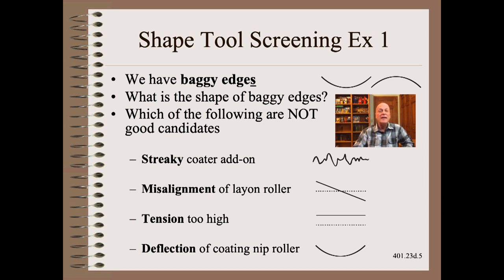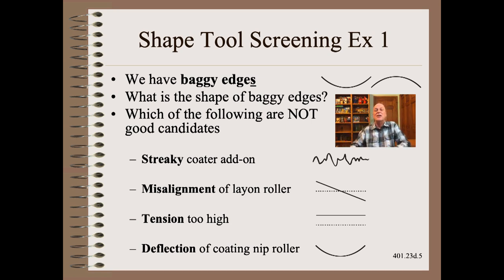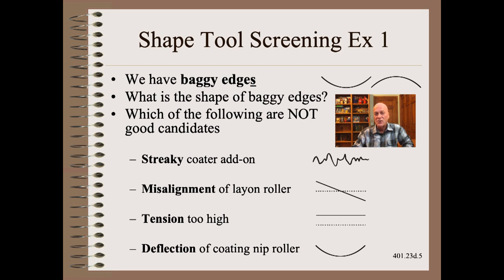But they are not central to the root cause — we have not found it yet, even if there is statistical correlation. Could deflection of a coating nip be responsible? Absolutely, and it has the right shape. Is it responsible? We don't know yet. All we know is that it is a good candidate for baggy edges because it has the correct shape. In this simplified example, we have eliminated three of four ideas for root causes using a simple observation that the problem favored the edges.